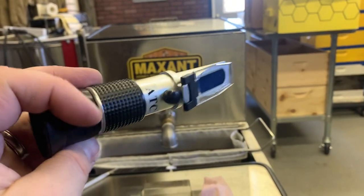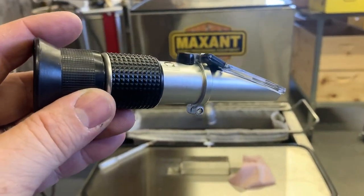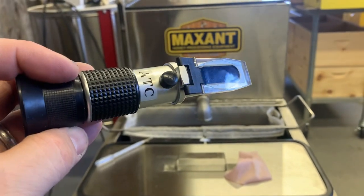So there we go. That's a refractometer and we've tested our honey to make sure that it is the proper moisture content.